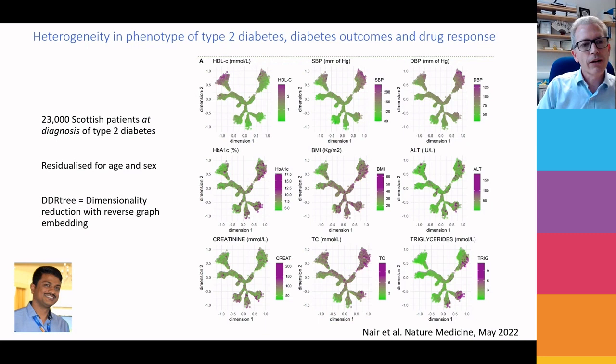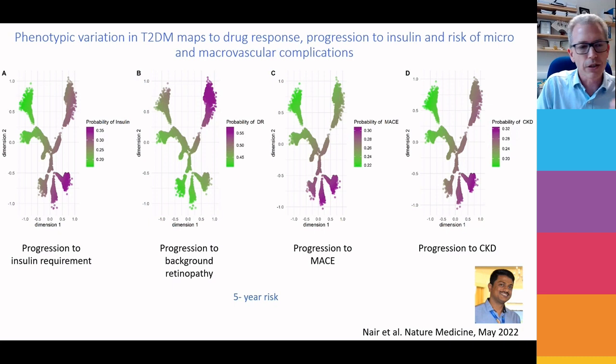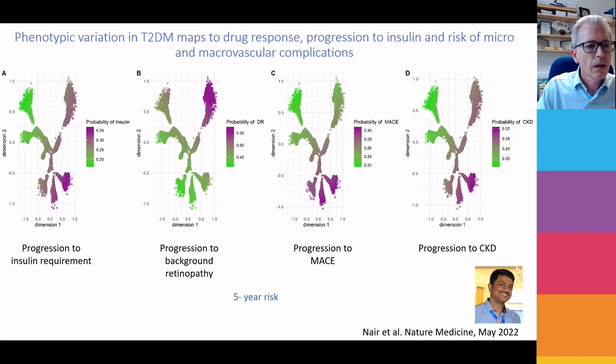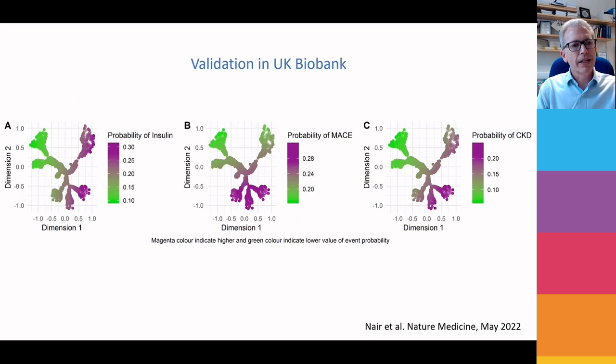You can now ask the question: does it matter where you are in the tree? You can overlay what is the risk of progression to insulin or the risk of complications of diabetes. People down at the bottom right are more likely to progress to insulin, while at the top right they're much more likely to get retinopathy — both background and referable — with cardiovascular disease and CKD again worse at the bottom. We validated this in UK Biobank, mapping the UK Biobank population with type 2 diabetes to the same Scottish tree and showing the same axes in terms of progression to insulin and to cardiovascular disease.